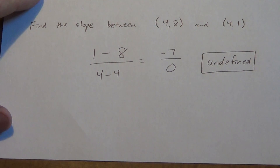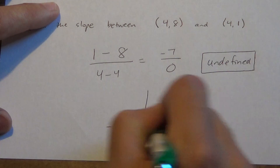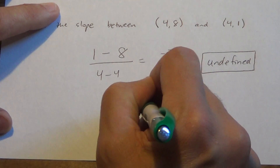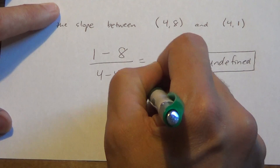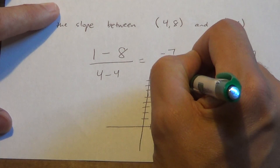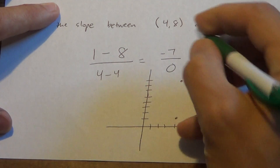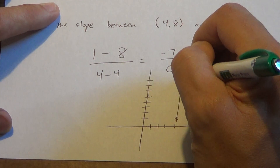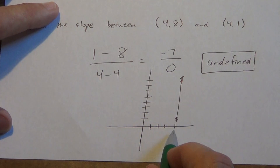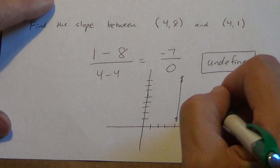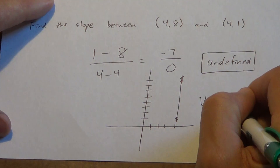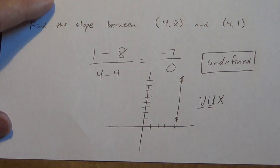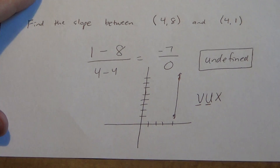If you graph this, you'd see it clearly. Plotting (4, 8) way up here and (4, 1) down here — if I connect them, you'll notice that line is completely vertical. It did not move left or right at all because they both share x = 4. Remember: vertical lines have an undefined slope. V, U — vertical lines have an undefined slope. So the slope is undefined.